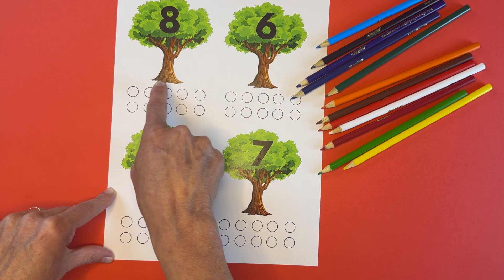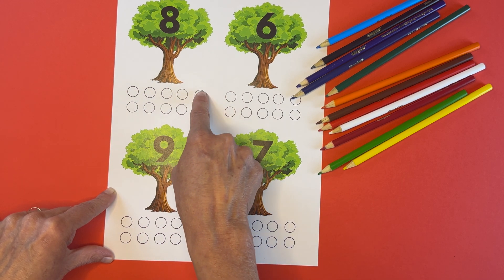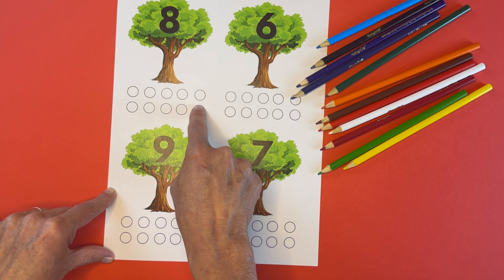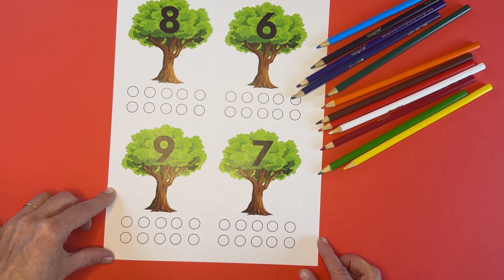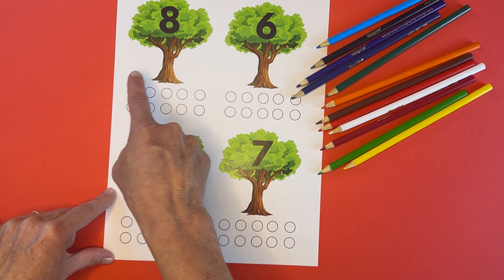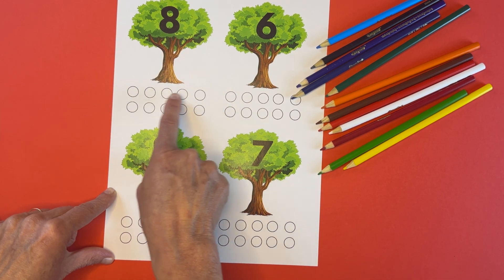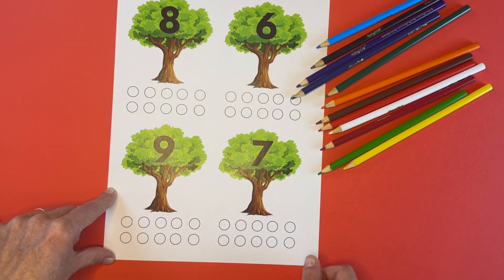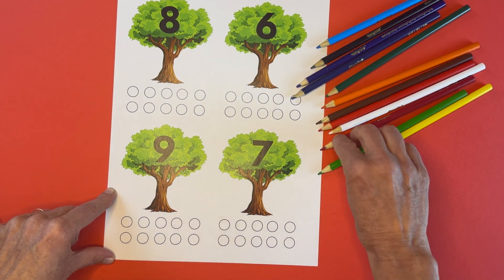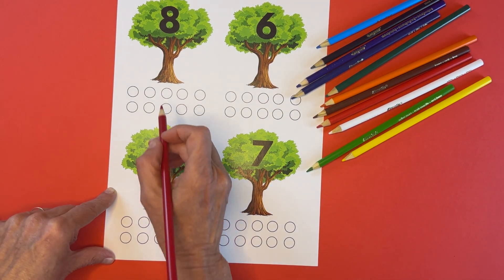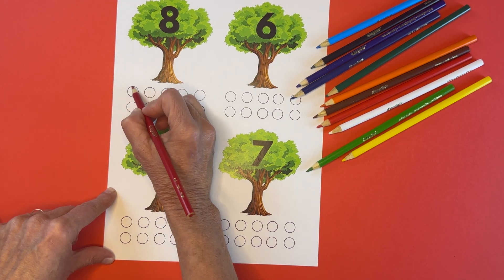One, two, three, four, five, six, seven, eight, nine, ten. Good job. You counted all the way from one to ten. This number eight tree needs to have how many circles colored in? That's right. We need to do eight. Here we go.